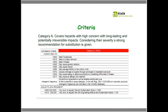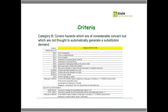Category B is the medium category between the worst and the best. It covers hazards of considerable concern, but which do not automatically generate a substitution demand. Looking at the list, most are hazard statements, and some are EU-specific hazard statements particular to the CLP regulation of the European Union. You can also see the term 'data gap in VIDAS' appearing in the list. I want to briefly explain what that means.